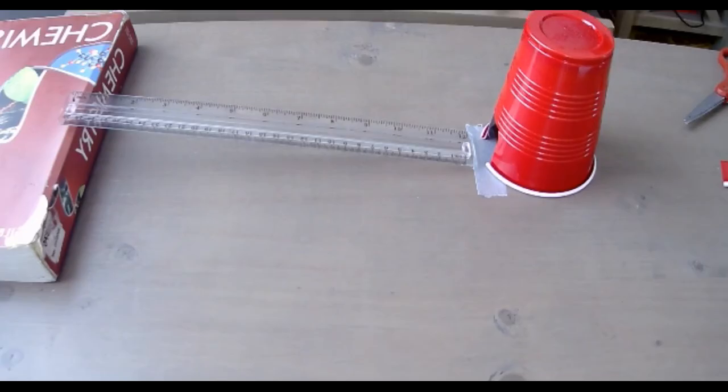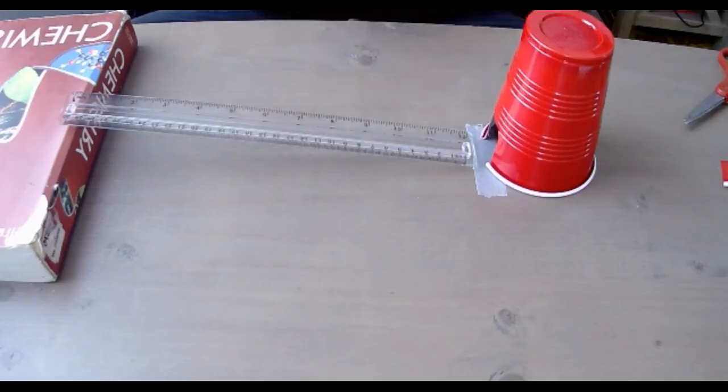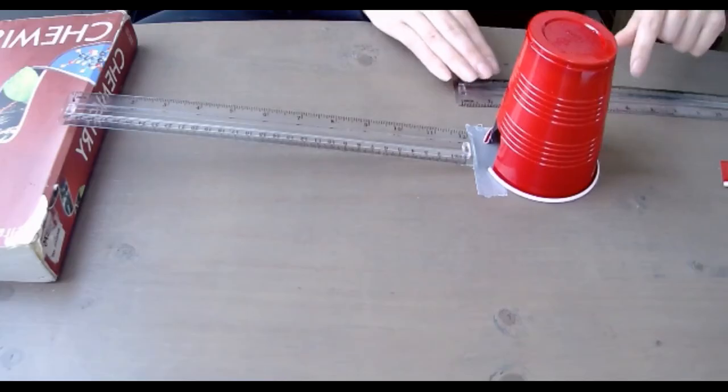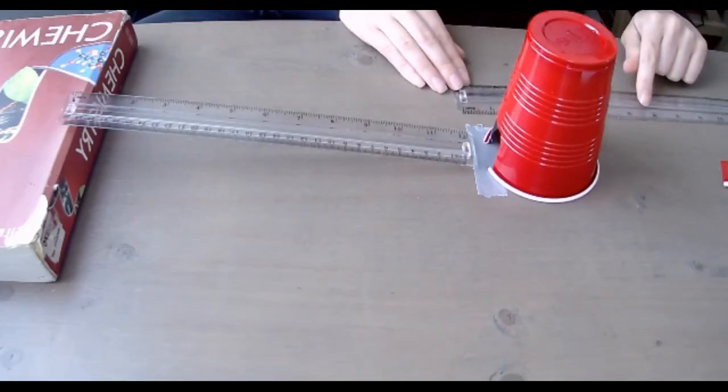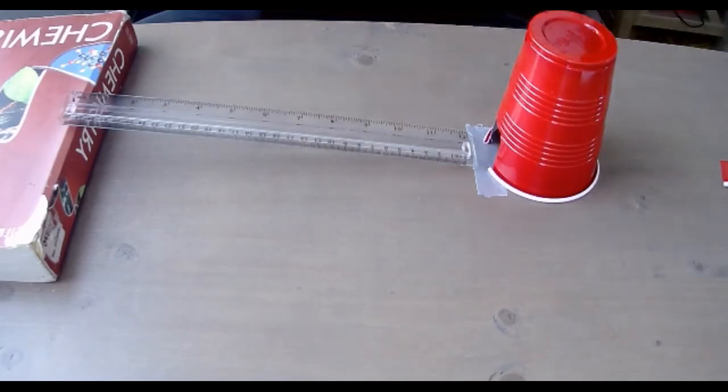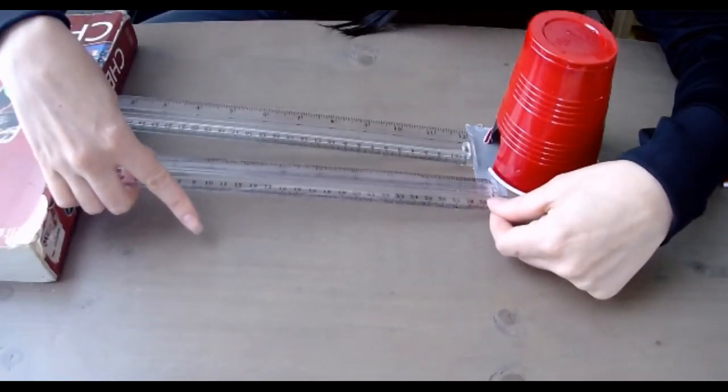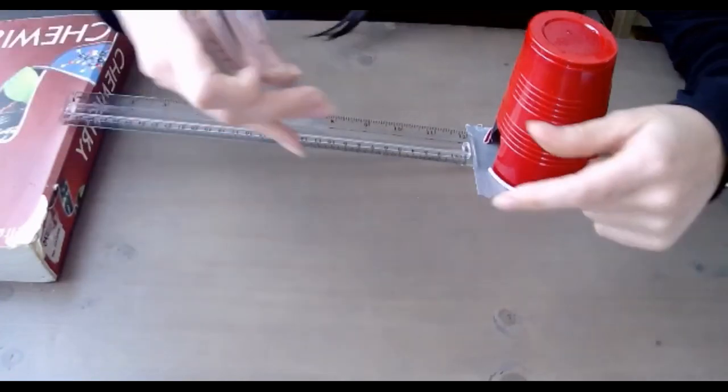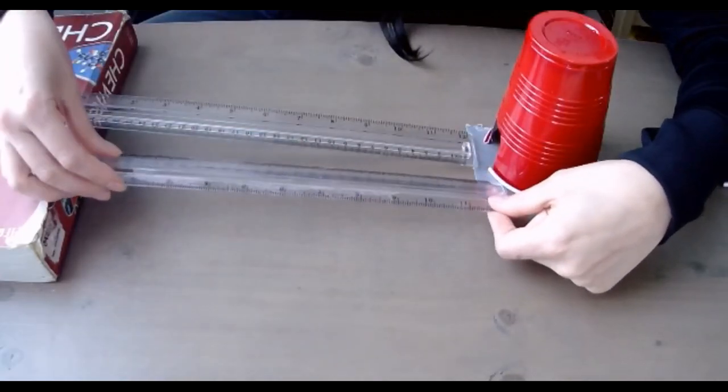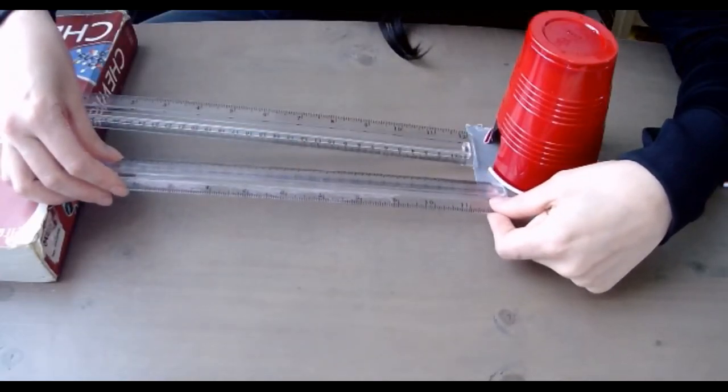Once that happens, take either the same ruler if you only have one, or another ruler if available. Go ahead and measure the distance from your starting point to where the cup rolled - you should not touch your cup. You can see here, in my case that would be about one centimeter.